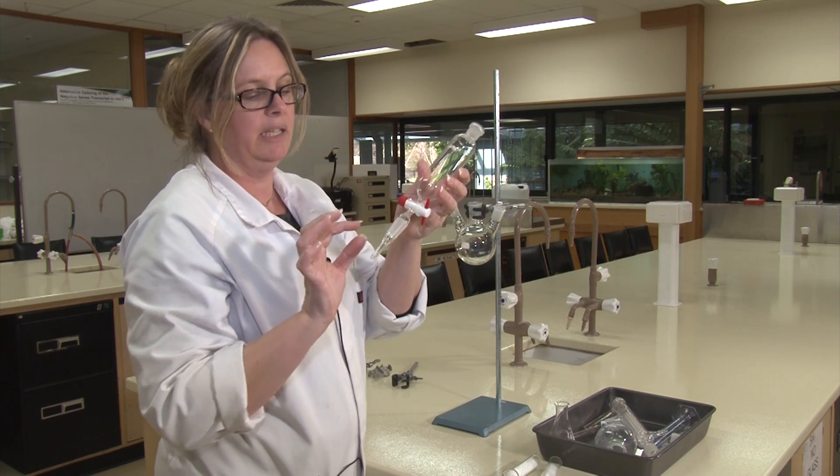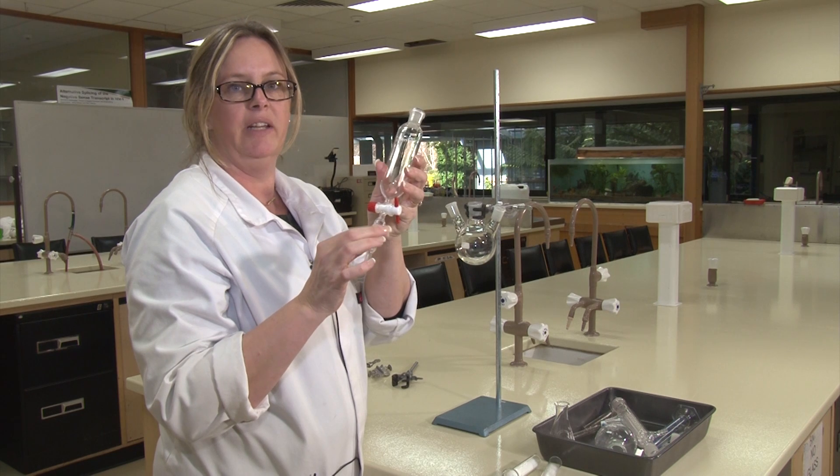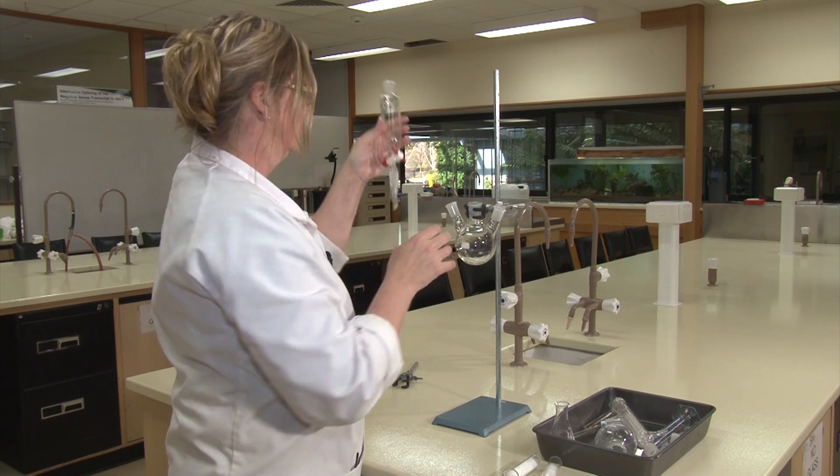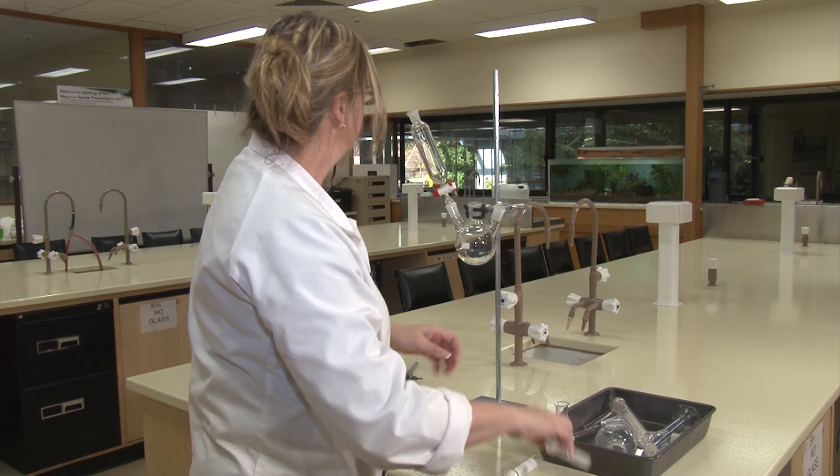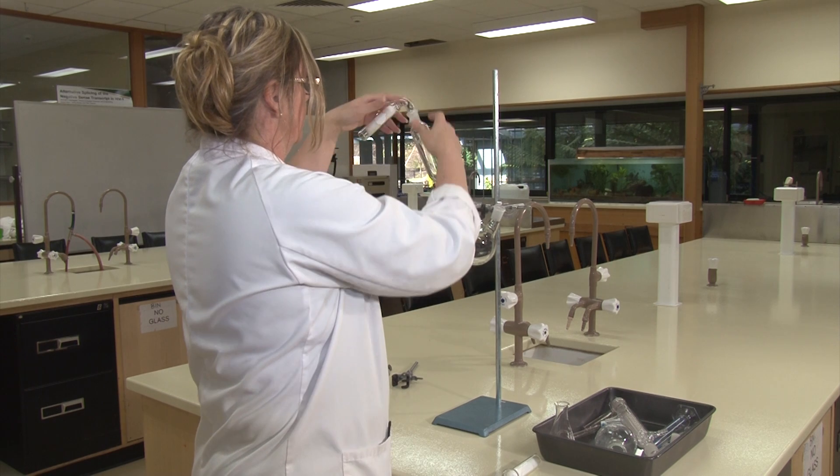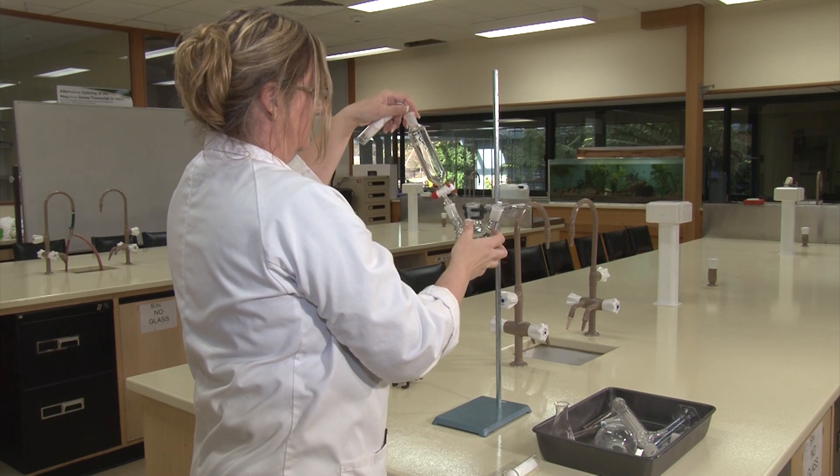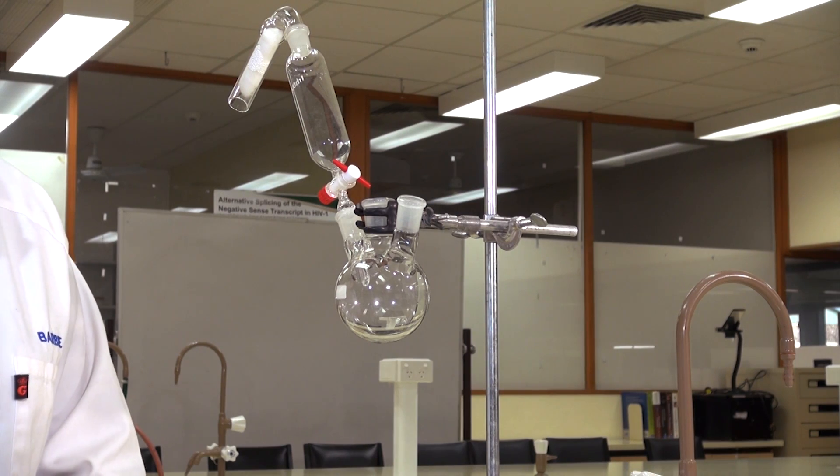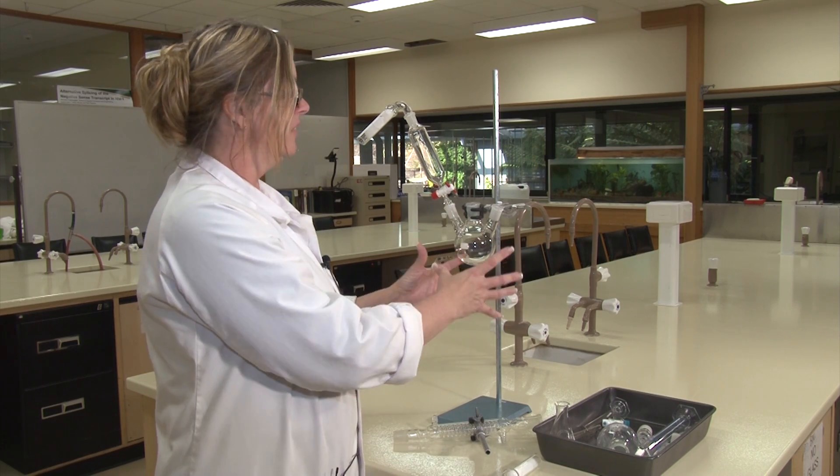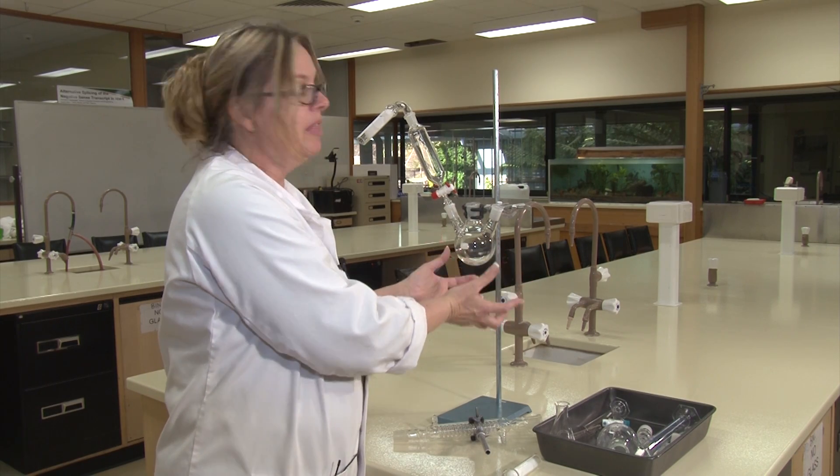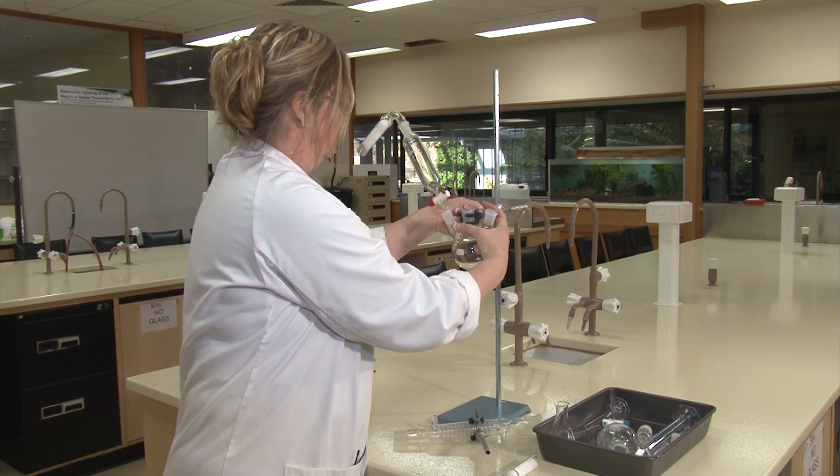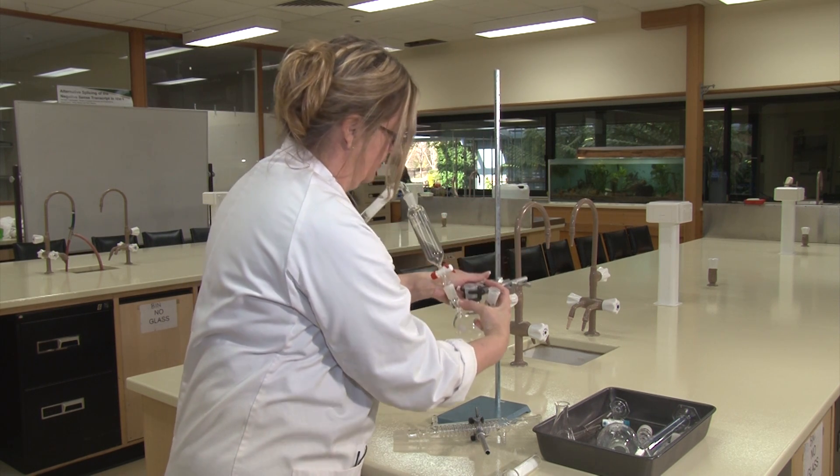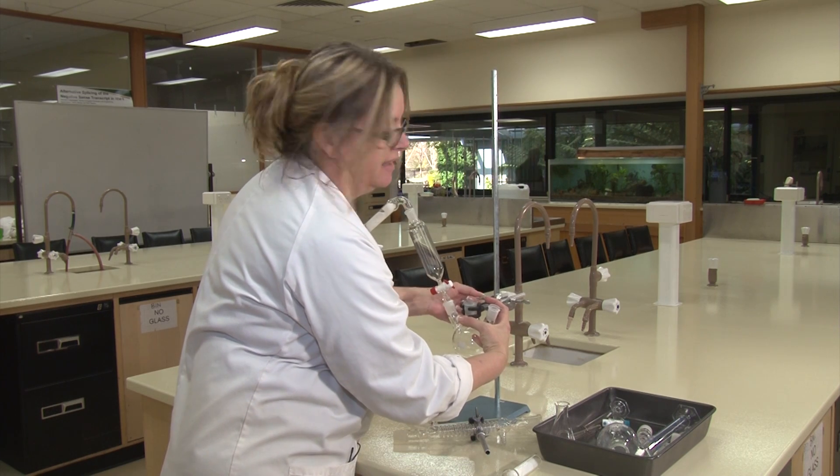Attach a dropping funnel. You can tell a dropping funnel because it's got the quick fit connection at the bottom. And put one of the drying tubes in the top. You're going to need a little bit of space underneath this flask so you can use an ice bath or some hot water or your hands to warm it up. About that's the right height.